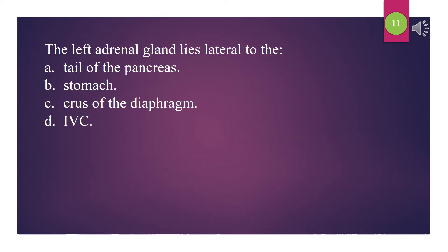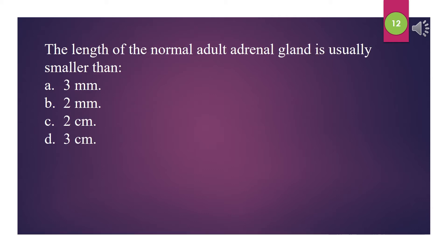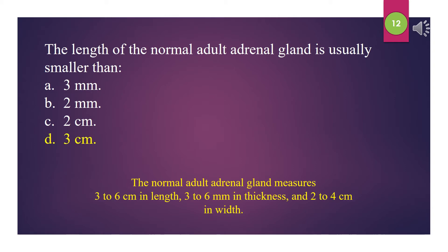The left adrenal gland lies lateral to the: A. Tail of the pancreas. B. Stomach. C. Crus of the diaphragm. D. IVC. The answer is C: Crus of the diaphragm. The length of the normal adult adrenal gland is usually smaller than: A. 3 mm. B. 2 mm. C. 2 cm. D. 3 cm. The answer is D: 3 cm.